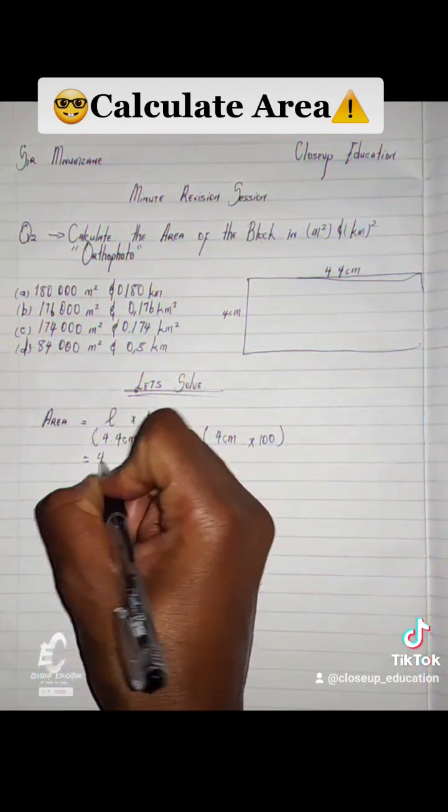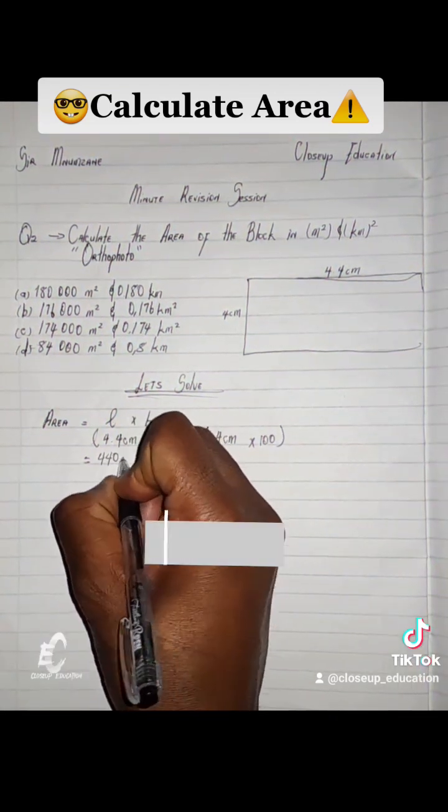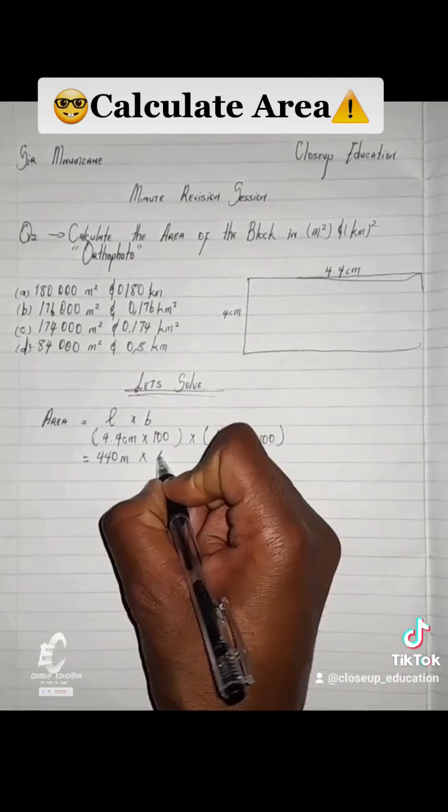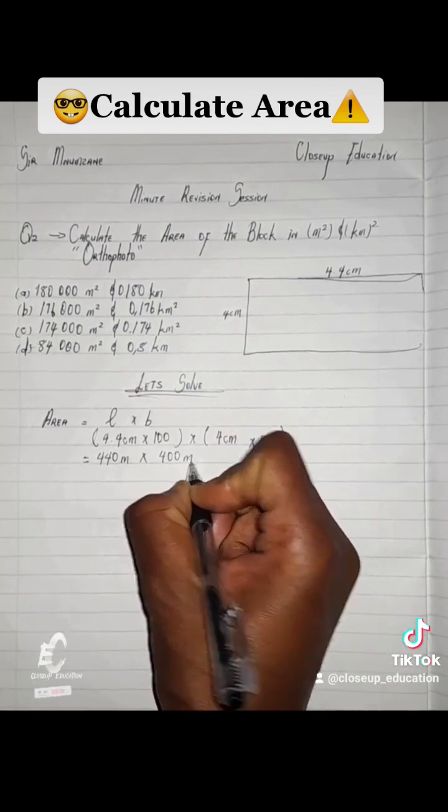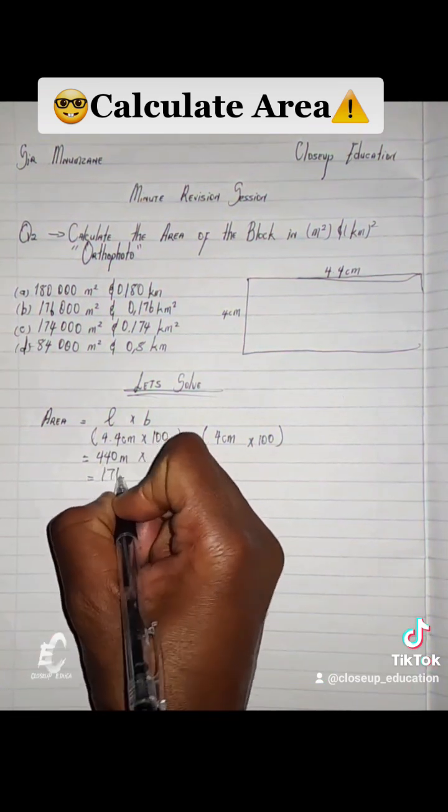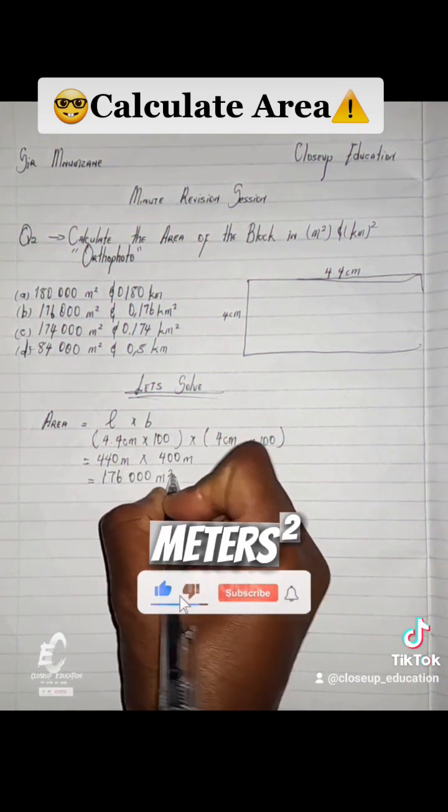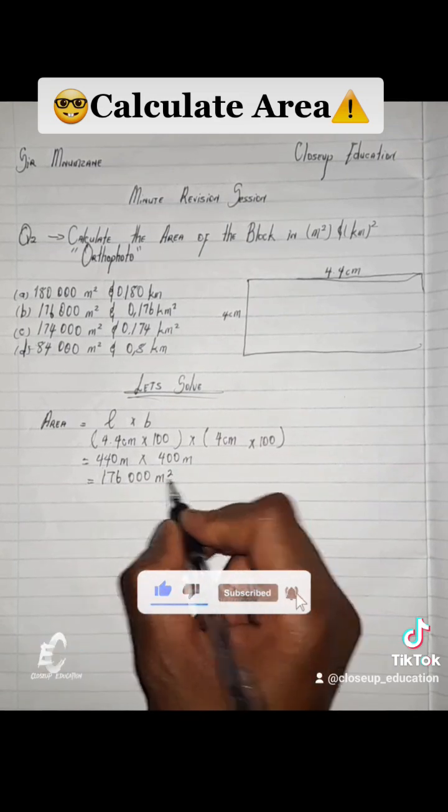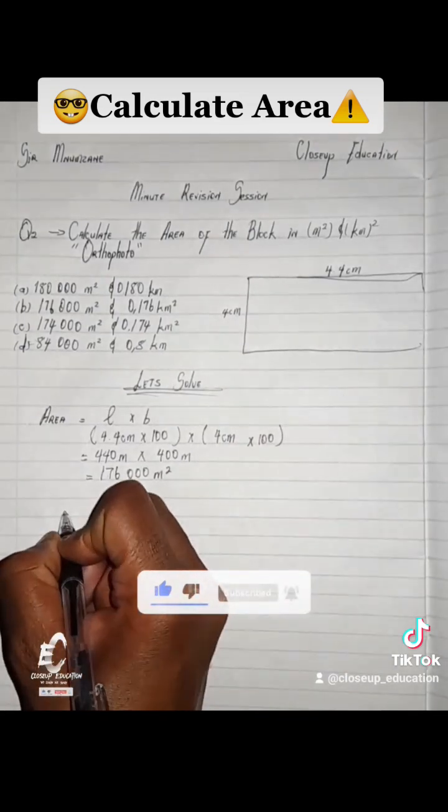Equals to 440 meters. The unit has changed. Multiply by 400 meters. The unit has also changed. Equals to 176,000 meters squared. Because there are 2 meters, now we put squared. So let's continue.